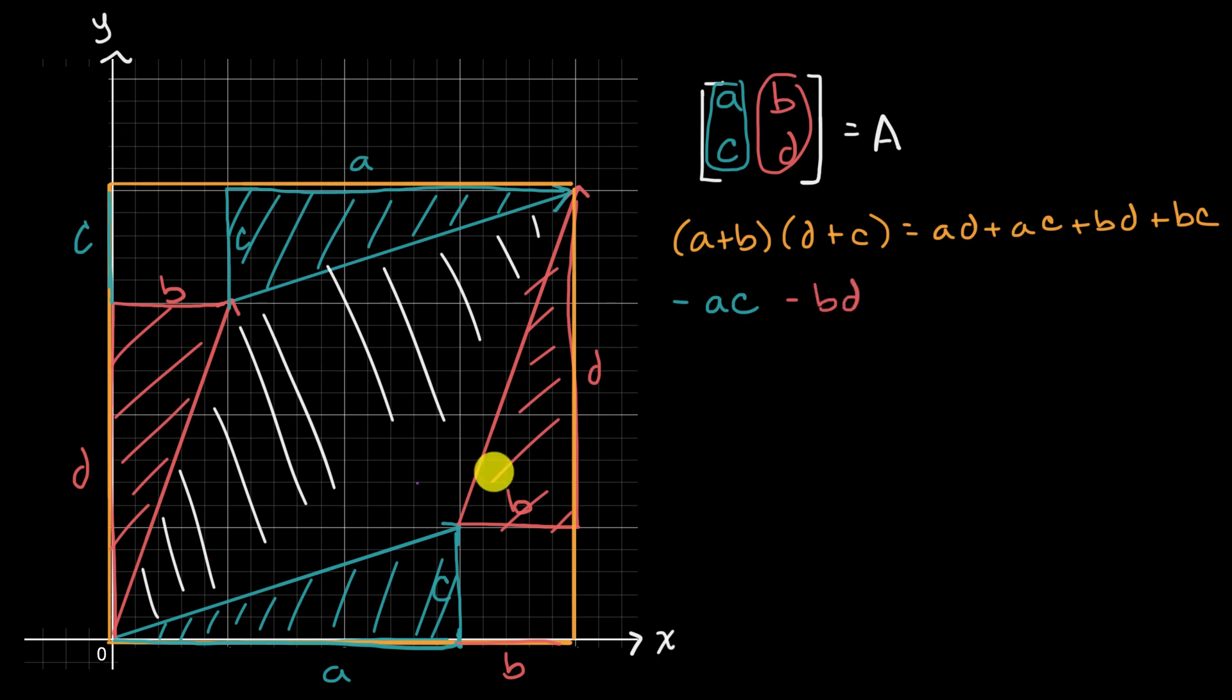And now what is the area of this right over here? Well, that is B times C. So minus B times C. Actually, that's also the area of this right over here. So we have another B times C. So minus two BC.